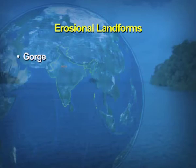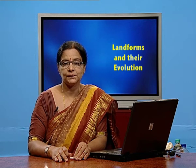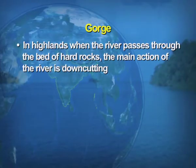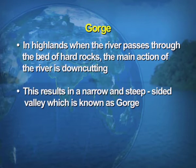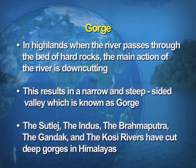We take up the erosional landforms formed by the river: gorge, canyon, V-shaped valley, and waterfalls. In highlands, when the river passes through the bed of hard rocks, the main action is downcutting. This results in a narrow and steep-sided valley known as a gorge. Various rivers have deep-cut gorges, for example the Satluj, the Indus, the Brahmaputra, the Gandak, and even the Kosi river.